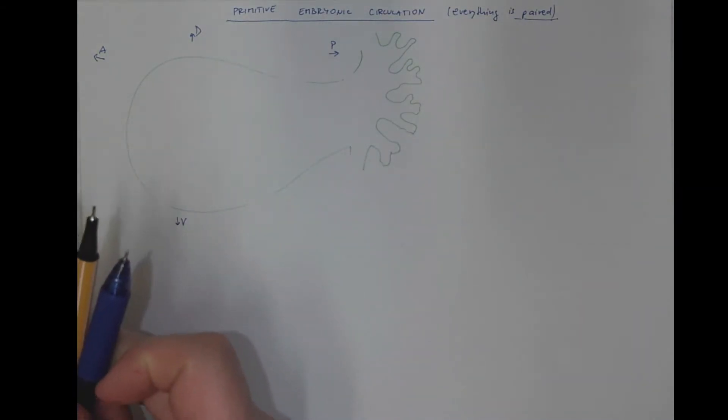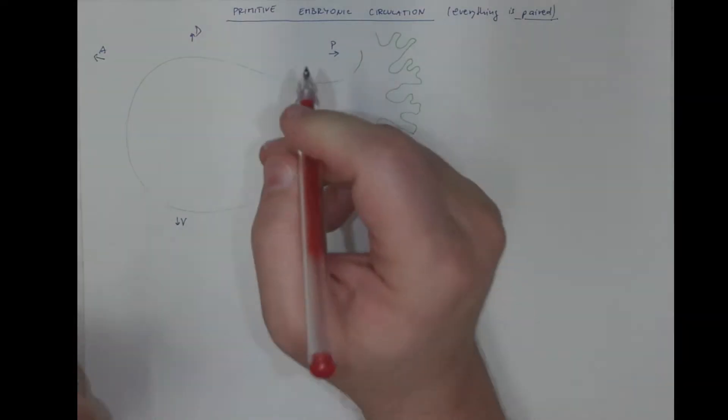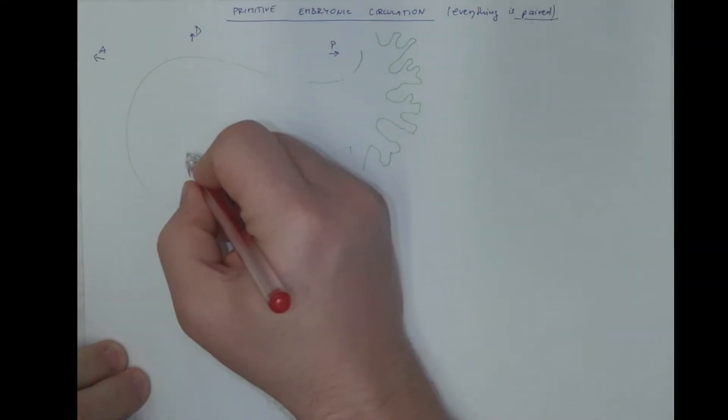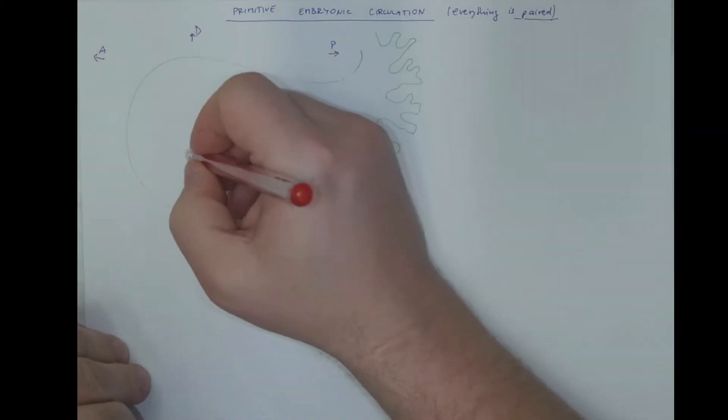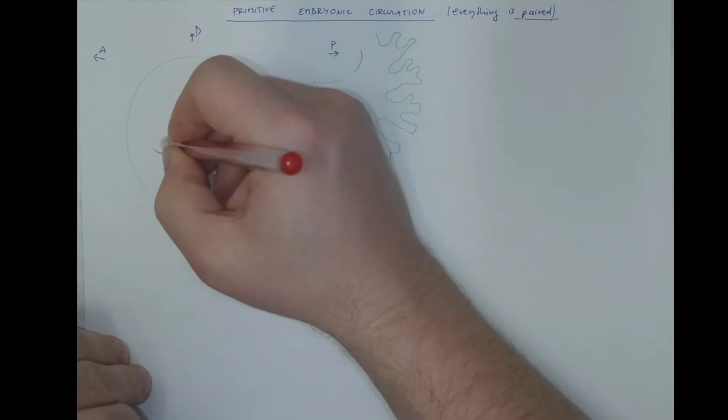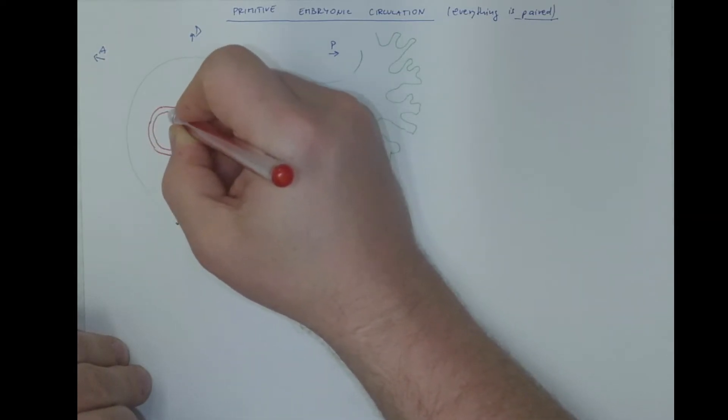Let's start with the heart tube. The heart starts as an enlarged tube, the outflow part of which is called the aortic sac, that continues as a short ventral aorta, which forms an arch or several arches through which the blood flows into the dorsal aorta.